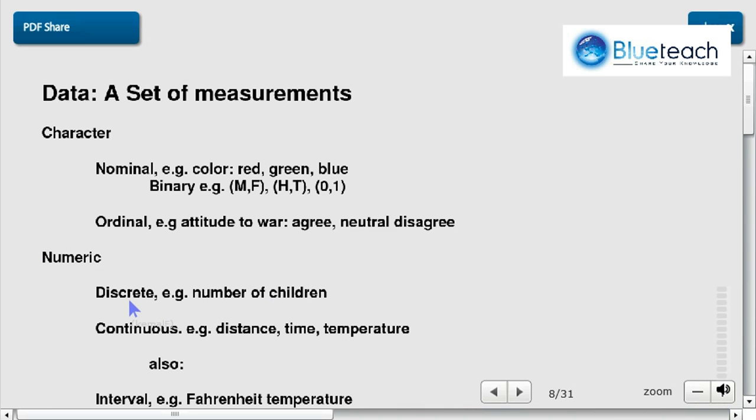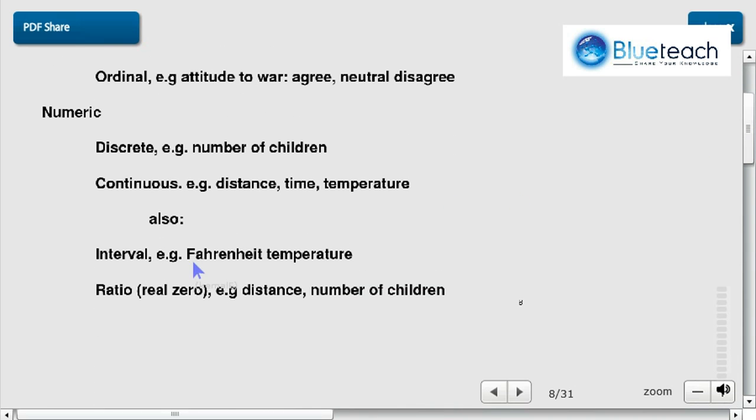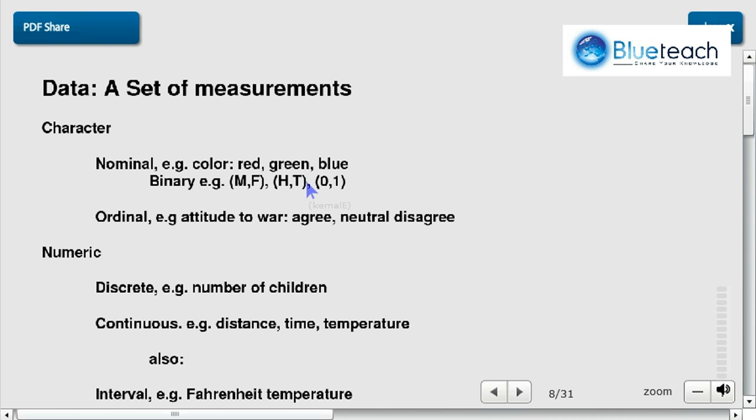It could be discrete, so for example the number of children. It could be continuous, like a distance, a time, a temperature. It could be an interval, like Fahrenheit temperature. It could be a ratio. So we have our two families of data, character and numeric.